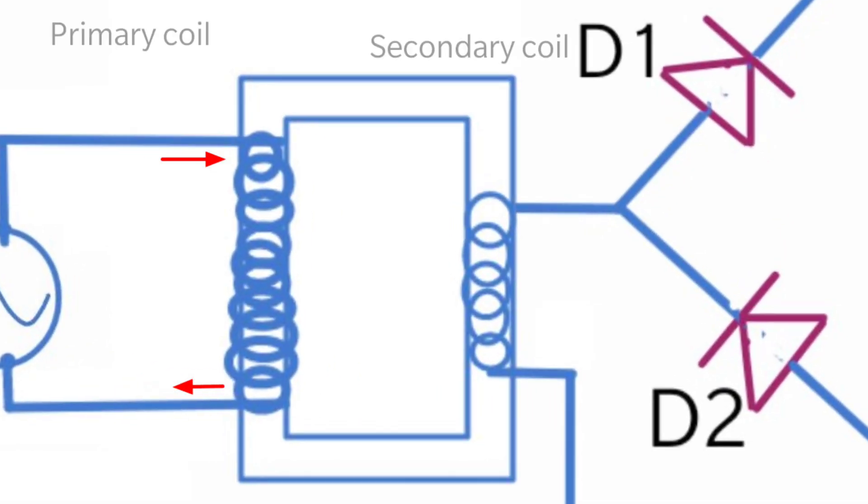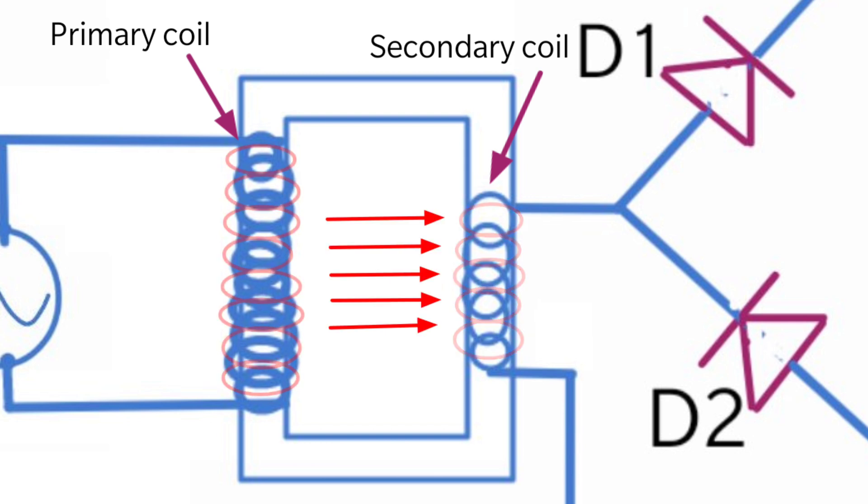When current passes through this coil, it generates a magnetic field around the coil. Due to this magnetic field, some part of voltage is induced into this secondary coil.